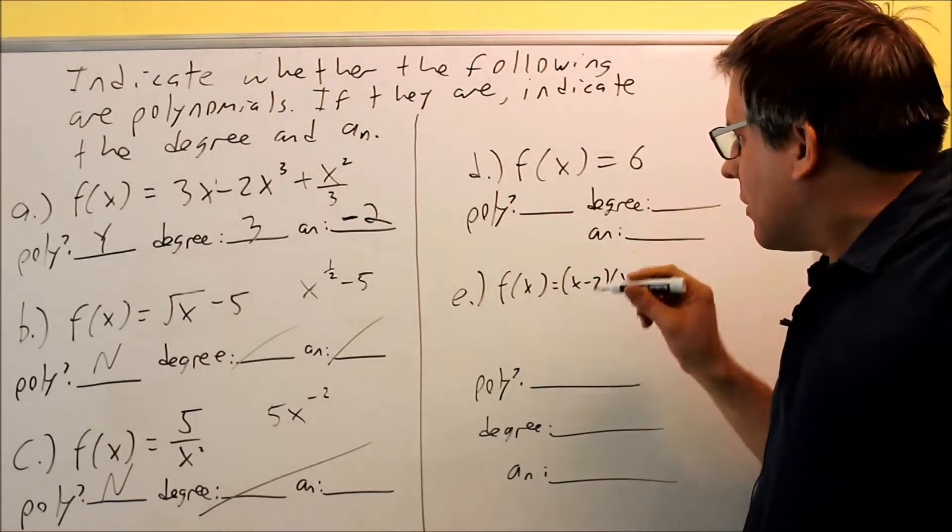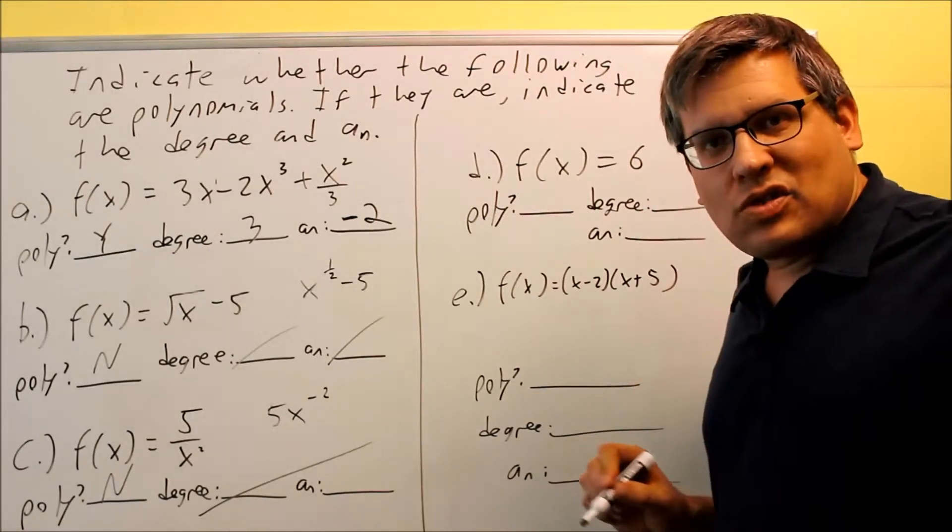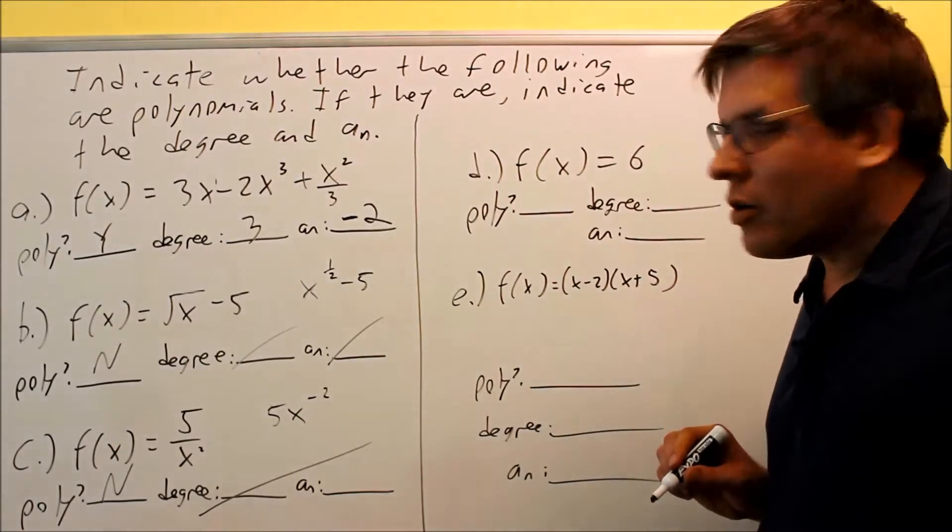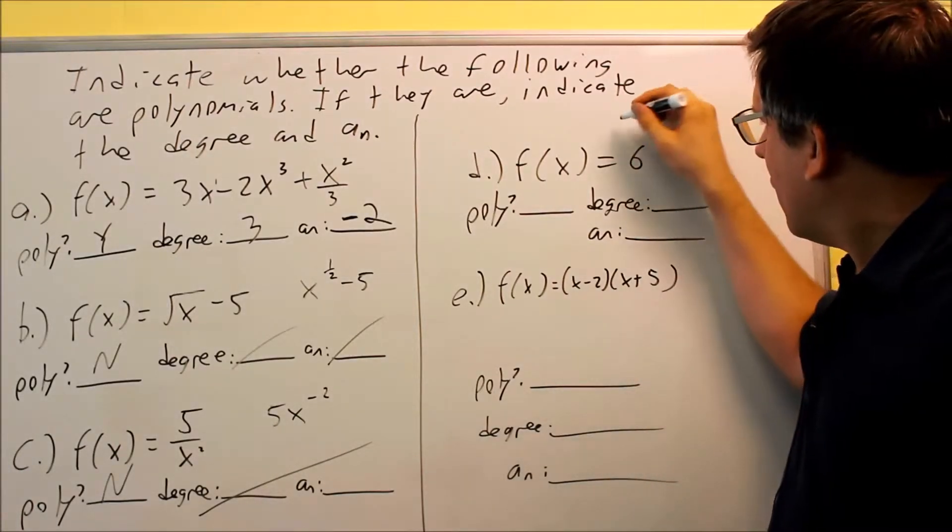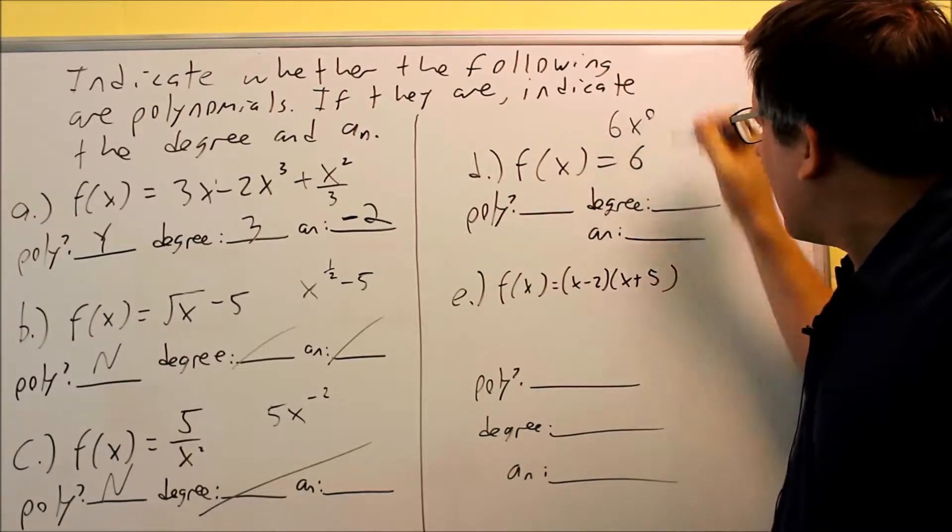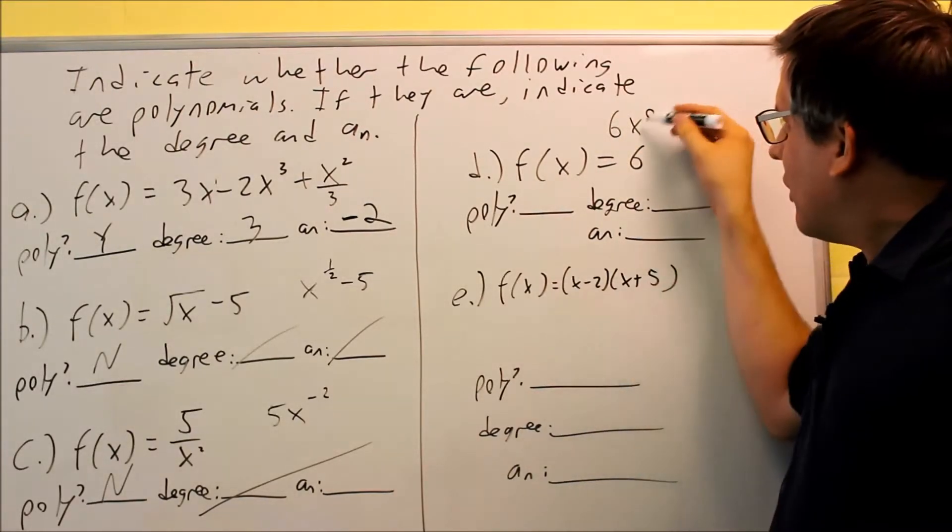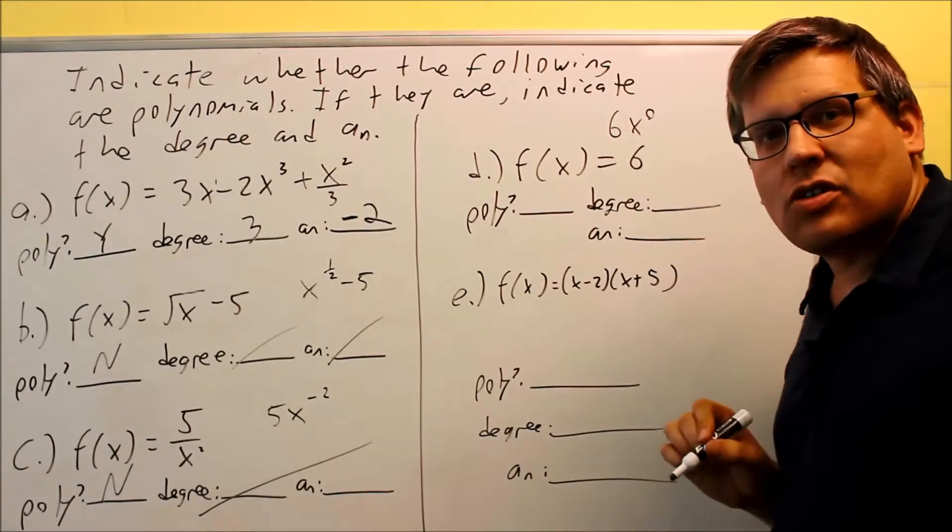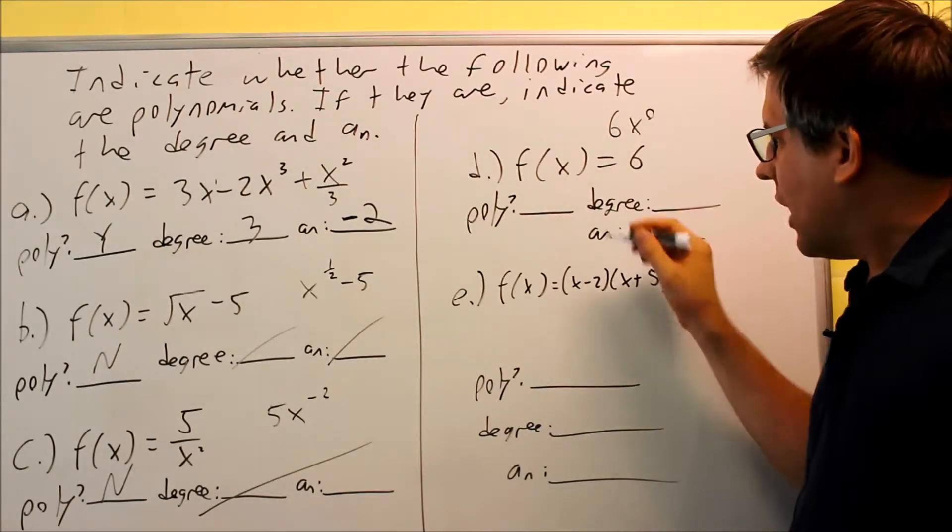Now let's take a look at parts d and e. Okay, so part d, f(x) equals 6. Okay, now I don't have an x term that comes after it, but remember if you have nothing there, this is really the same thing as 6x to the 0. Anything to the 0 power is 1, so I could write 6 as 6x to the 0. So that's okay.